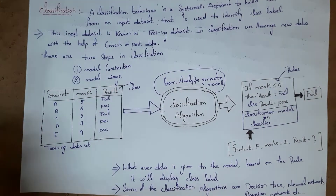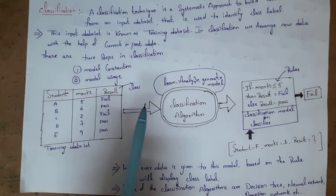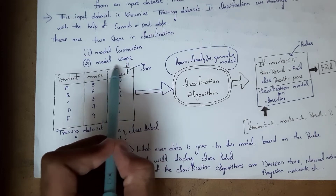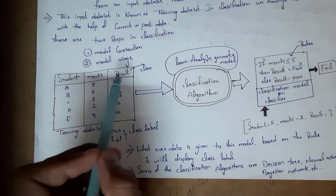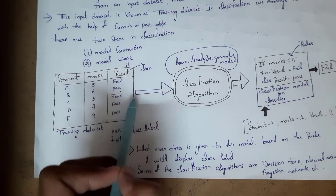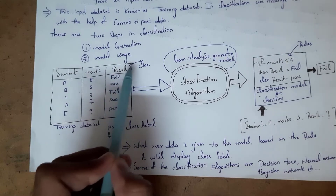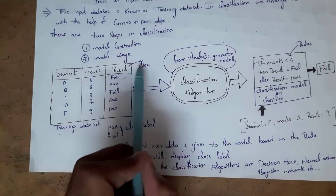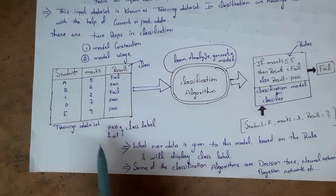I took one input data set. That input data set contains three attributes: student, marks, and result. In any input data set, we call the last attribute as class. Here the last attribute is result, so I call this result as class. Whatever data is present inside this class, we call it class label. There are two class labels: fail and pass.